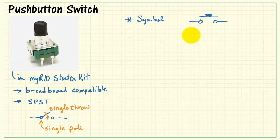The symbol for a push-button looks like this. We have the two terminals for the push-button switch, and then a movable piece that either breaks the contact or completes the contact.